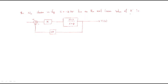The given s value, minus 2.75, may be considered as a pole lying on the root locus. If we draw the root locus we will get that value, and we are asked to find out the value of K. If any point s is on the root locus, it must follow two conditions.